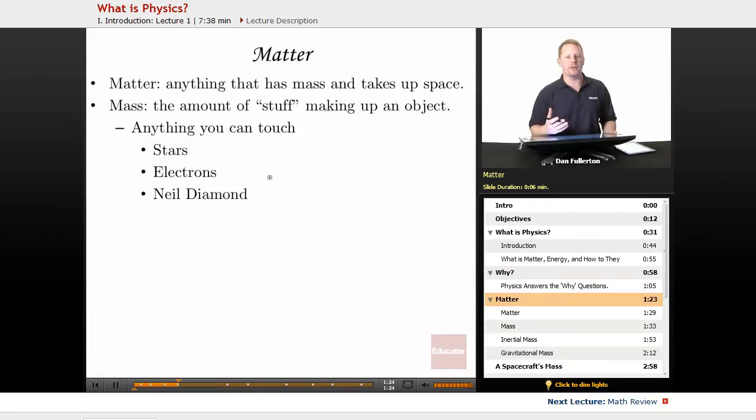Well, to do this, we have to start talking about what the world, the universe, is made up of. We're going to start with matter. Matter is anything that has mass and takes up space, where mass is the amount of stuff making up an object. And we can get into a little bit more detailed definition than that. But for now, we can think of it basically as anything you can touch. Stars, electrons, Neil Diamond, all mass, all matter.